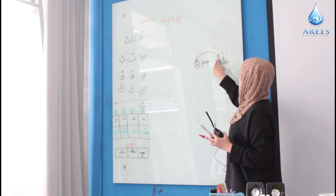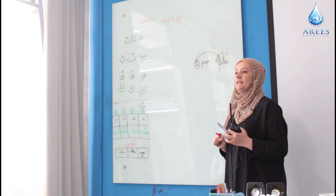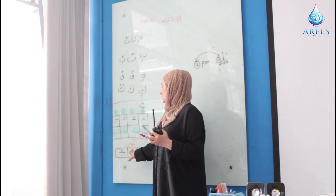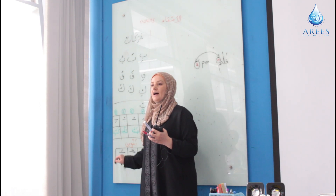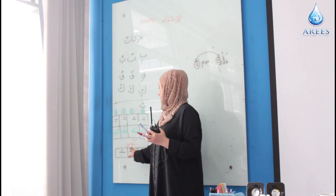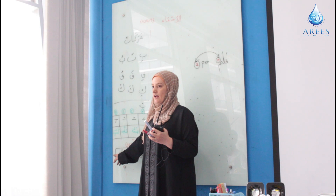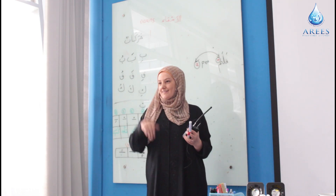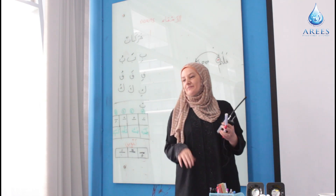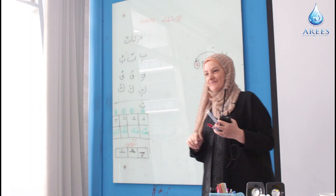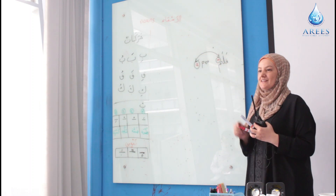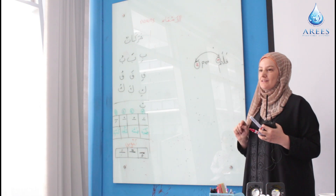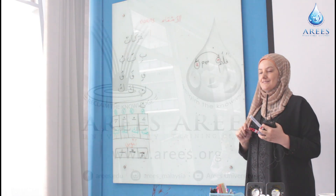They are pronounced: -un, -an, -in. You have the choice — two small waws or one small waw like this, okay?